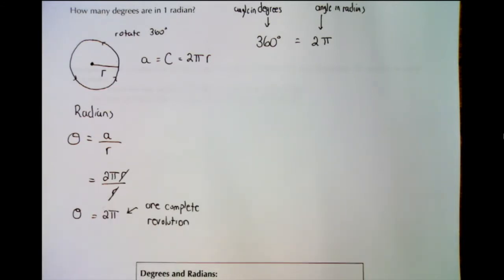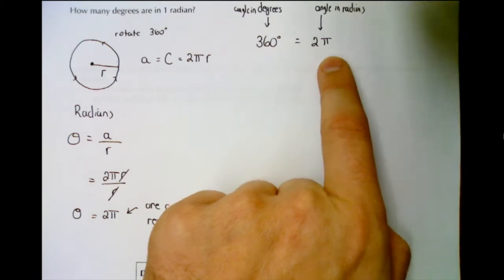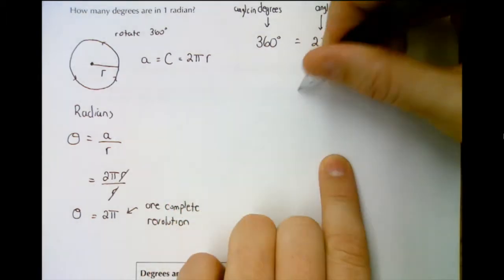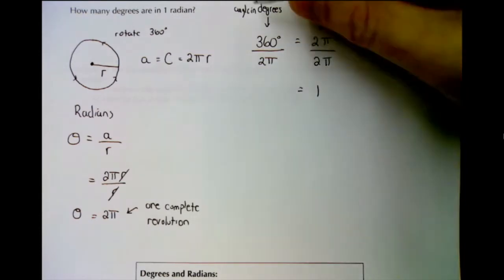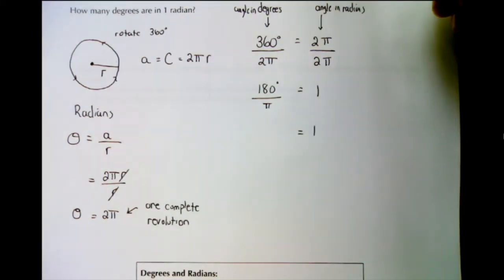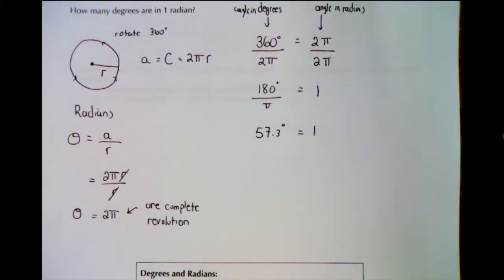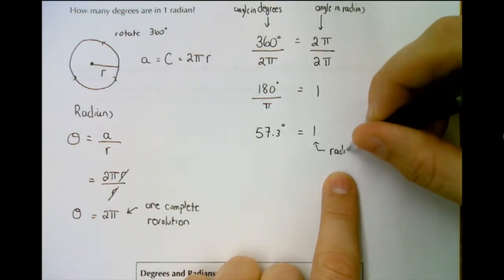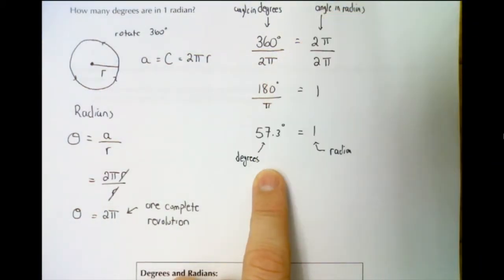To find what one radian equals in degrees, we want the radian side of our equation to equal 1. We divide both sides by 2π: 360 divided by 2π reduces to 180 over π. If you divide 180 by π in your calculator, you get approximately 57.3 degrees. So one radian is approximately 57.3 degrees.